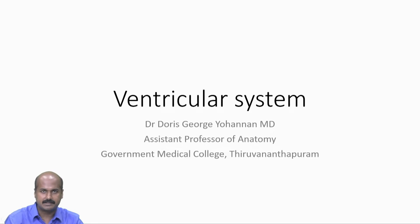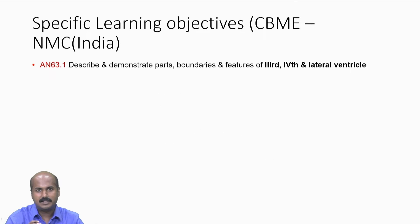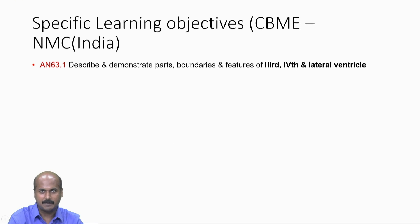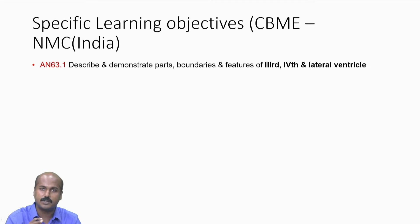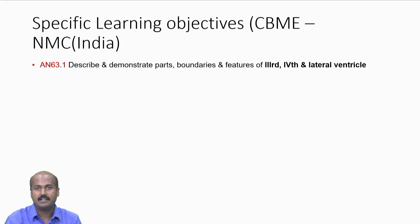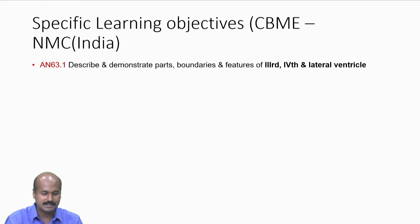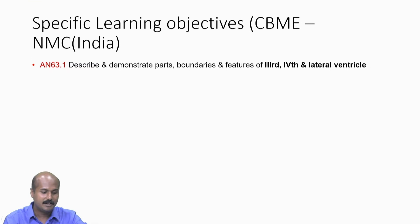Today we will learn about the ventricular system. According to the National Medical Commission prescribed CBME guidelines, competency AN63.1 mentions that a student needs to describe and demonstrate the parts, boundaries and features of the ventricles — that is the third ventricle, fourth ventricle and the lateral ventricle. This is a competency prescribed as a necessity by the National Medical Commission of India.